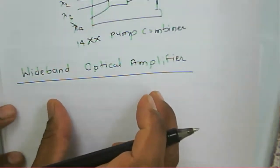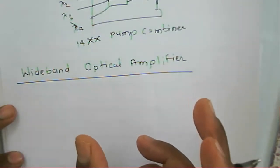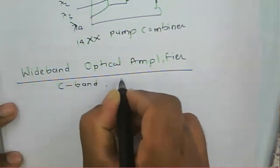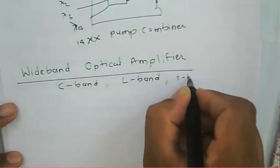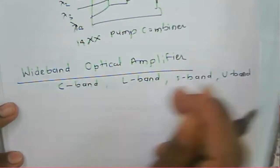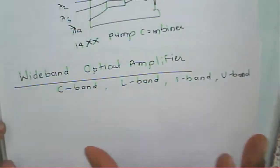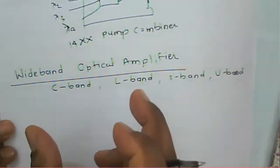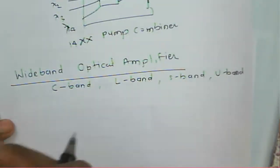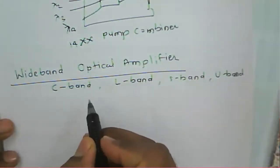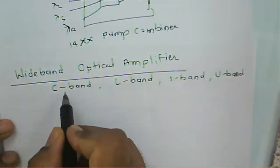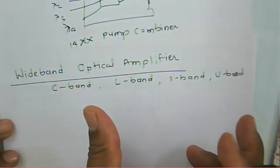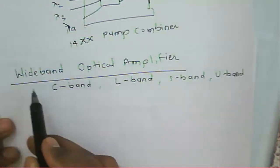In this wideband optical amplifier, we are combining two amplifiers that are operating at the C band, L band, S band, or U band — there are different bands of an optical amplifier. We are combining two bands together to provide effective amplification for those two particular bands: either S and L band, C and L band, or C, S, and L band in different combinations. That's why this is called a wideband optical amplifier.